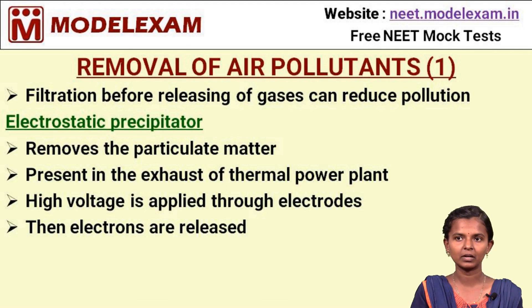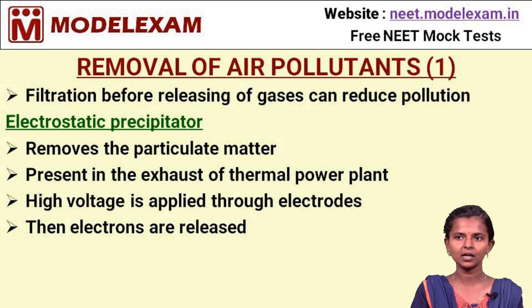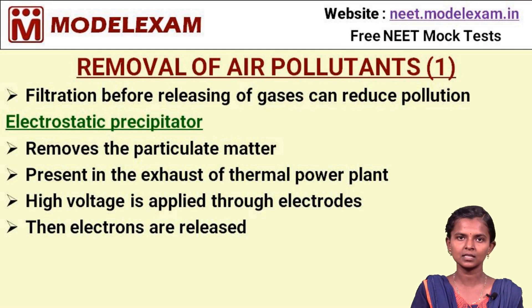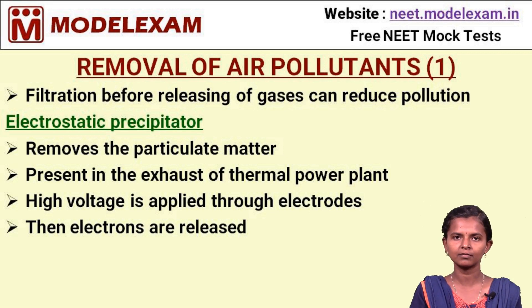Removal of Air Pollutants, Part 1. Here we are going to discuss how air pollutants are removed from industrial plants. The first method is filtration. Filtering gases from industries before release can reduce the amount of pollutants being released. One method used is the electrostatic precipitator. It is used to remove particulate matter from gases released from industries, and is present in the exhaust of thermal power plants. A high voltage is applied through electrodes in the electrostatic precipitator, releasing electrons, which aid in the removal of particulate matter.